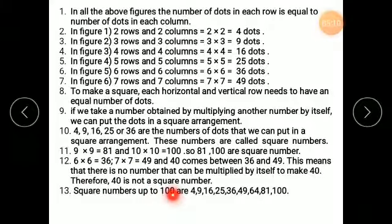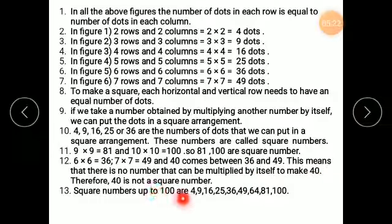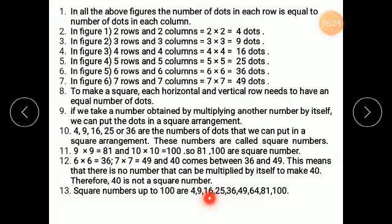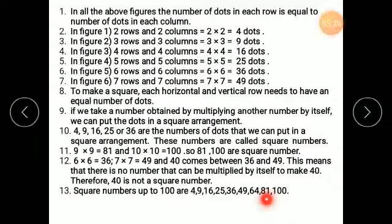Square numbers up to 100 are: 2 twos are 4; 3 threes are 9; 4 fours are 16; 5 fives are 25; 6 sixes are 36; 7 sevens are 49; 8 eights are 64; 9 nines are 81; and 10 tens are 100. Only these are the square numbers available up to 100. Any number between them will not be a square number.